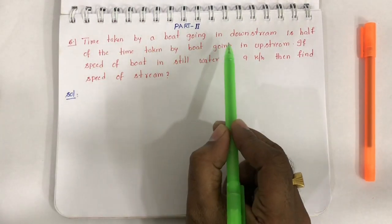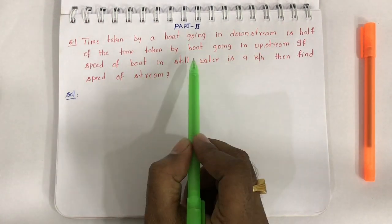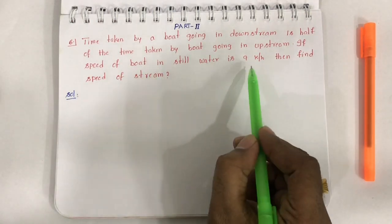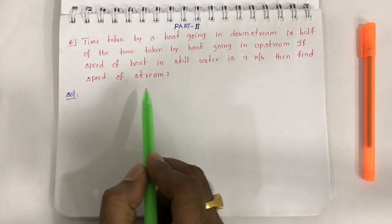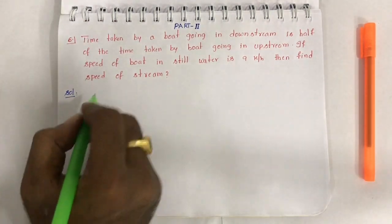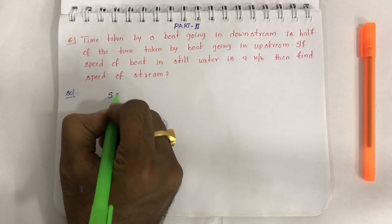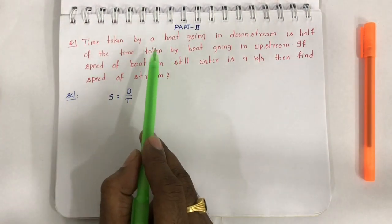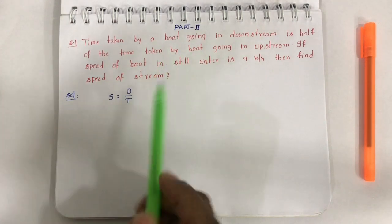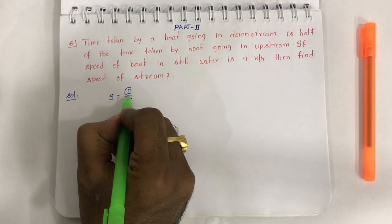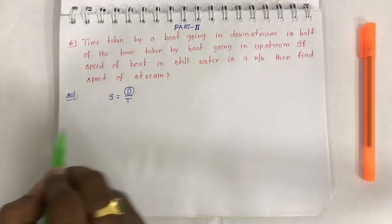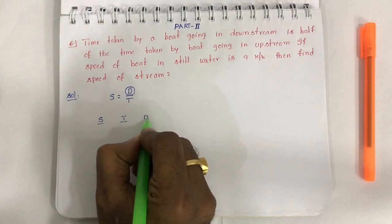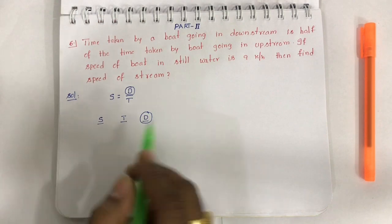The time taken by a boat going in downstream is half of the time taken by the boat going in upstream. If the speed of the boat in still water is 9 km per hour, then find the speed of the stream. So first of all, we have the basic identity: speed is equal to distance traveled by time.